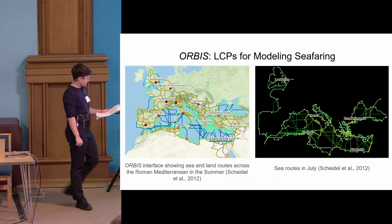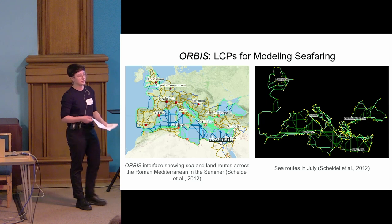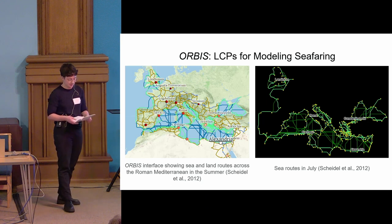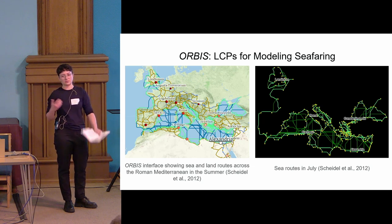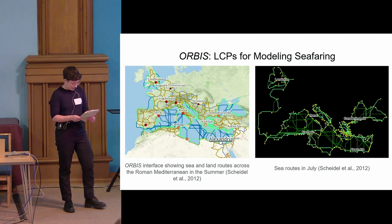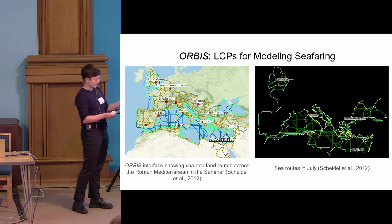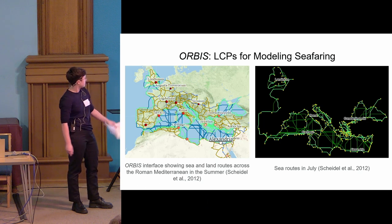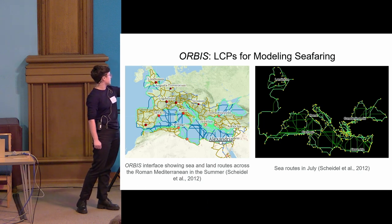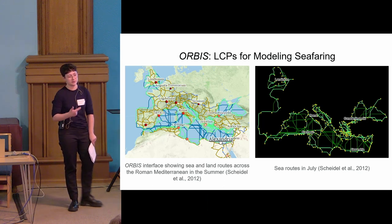In maritime contexts, least cost paths are often created using weather data, particularly wind data, as the primary influence on ancient sailing. A good example is Scheidel's Orbis model, which calculates least cost paths for sailing over the Mediterranean Sea during the Roman period. The image on the right highlights the sea routes of this model, created using wind data primarily, but also current and wave data.